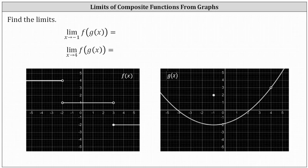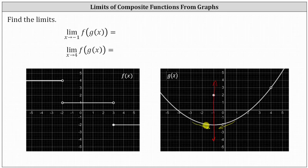We begin by determining the limit as x approaches negative one of the inner function g of x, where the graph of g of x is on the right. We're approaching x equals negative one, this vertical line here, from the left and the right. As we approach from both sides, notice we're approaching the y value or function value of negative two.